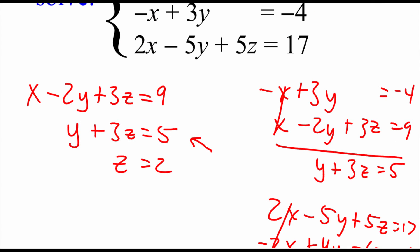And then we would use back substitution to go through and solve it. You might notice this system looks really familiar — this is the system we started the video with when doing back substitution. When we solved that one, we got the ordered triple (1, negative 1, 2).